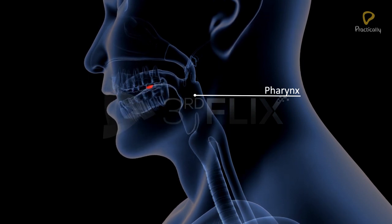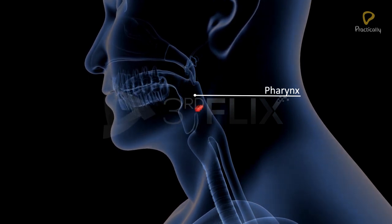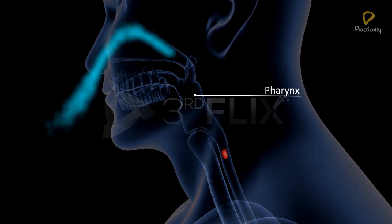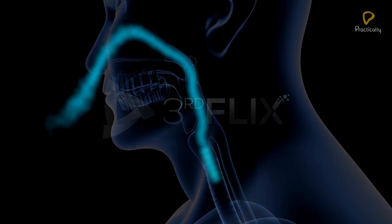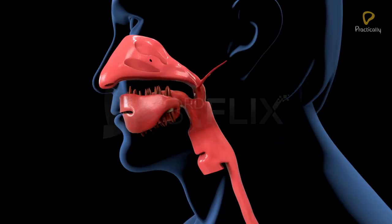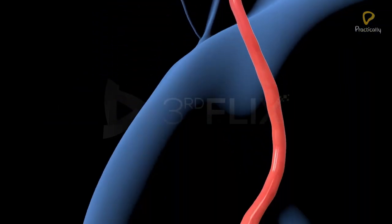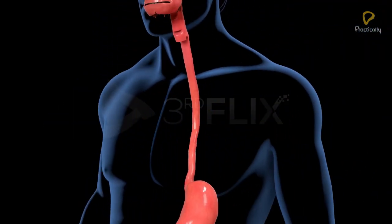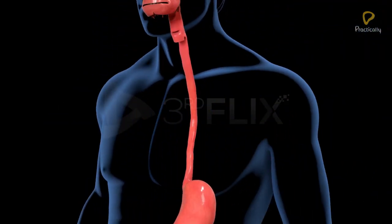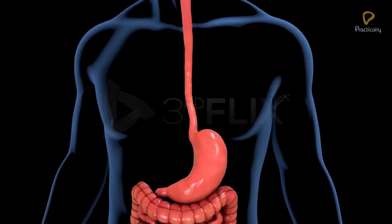The buccal cavity opens into the pharynx, which is a common chamber for the passage of food and air. The pharynx leads into the oesophagus, also called the food pipe.